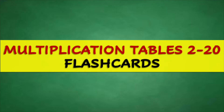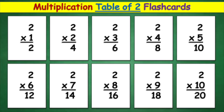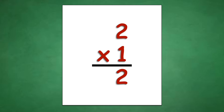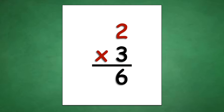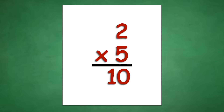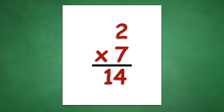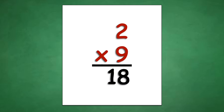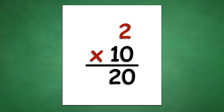Multiplication Tables 2 to 20 Flashcards. Table of 2: 2 times 1 equals 2, 2 times 2 equals 4, 2 times 3 equals 6, 2 times 4 equals 8, 2 times 5 equals 10, 2 times 6 equals 12, 2 times 7 equals 14, 2 times 8 equals 16, 2 times 9 equals 18, 2 times 10 equals 20.